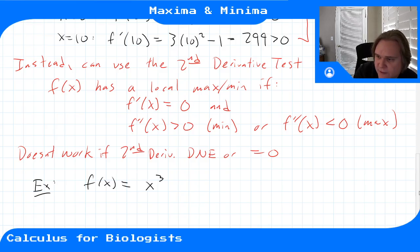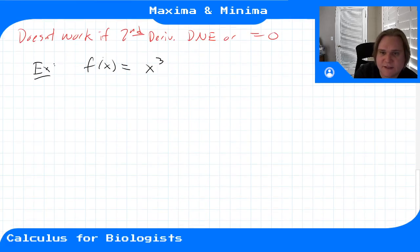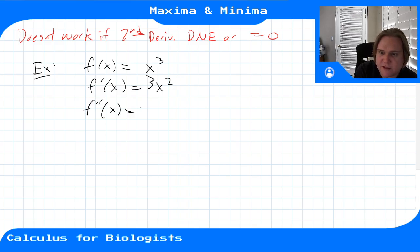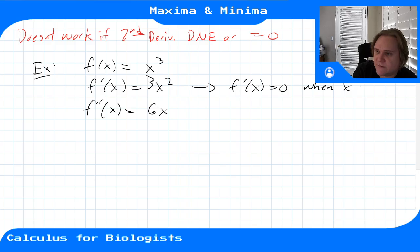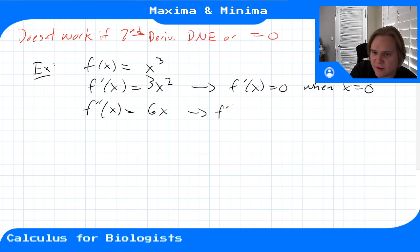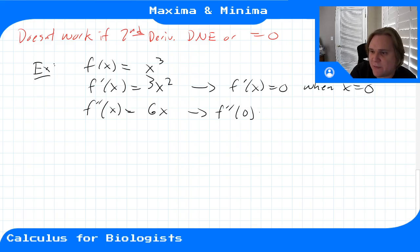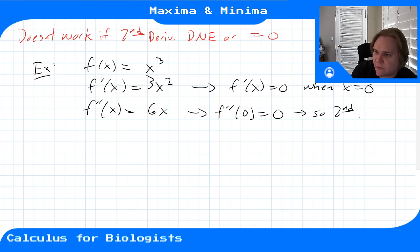An example is f(x) = x³. Here f'(x) = 3x², f''(x) = 6x. The critical point is at x = 0 where f'(x) = 0, but f''(0) = 6(0) = 0, so the second derivative test doesn't work.